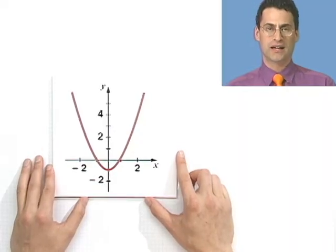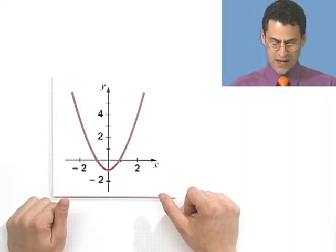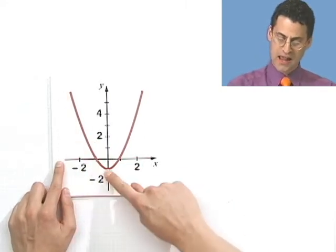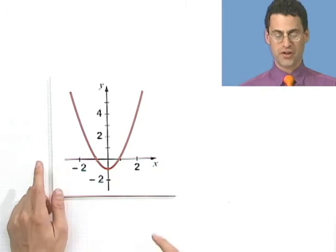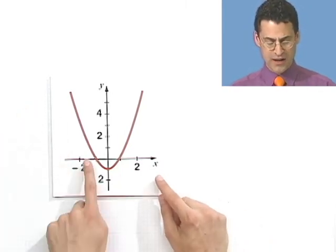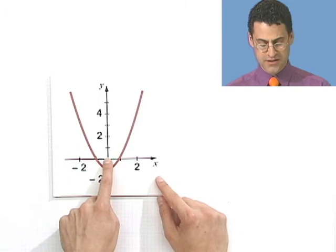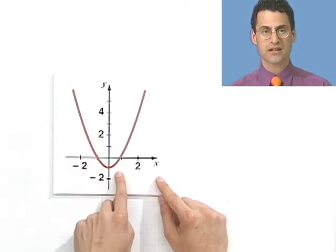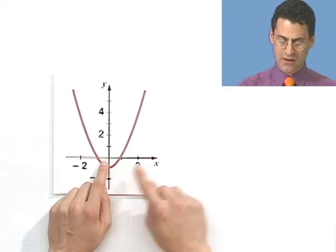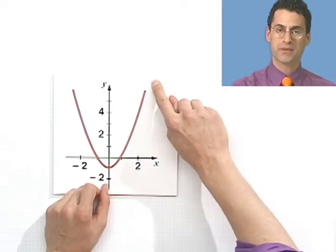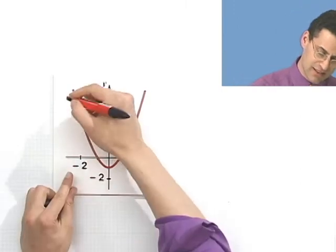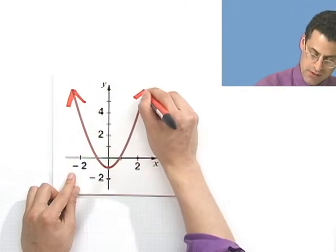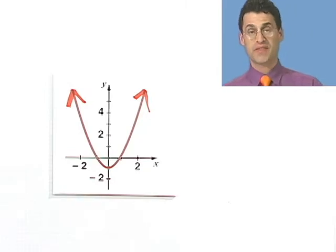Here's a parabola-looking curve. You can see that the function is first decreasing and then increasing. The region where the function is decreasing is from negative infinity all the way up to zero — those are the x values for which the function is decreasing. But then once you go from zero outward, the function starts to increase again.